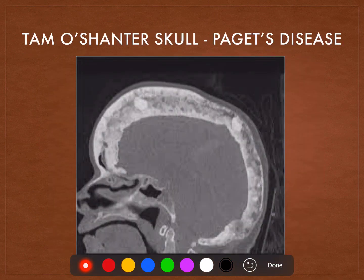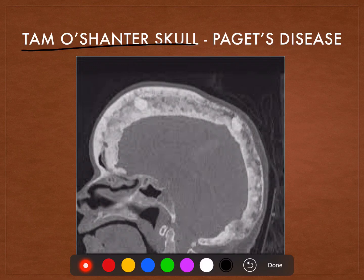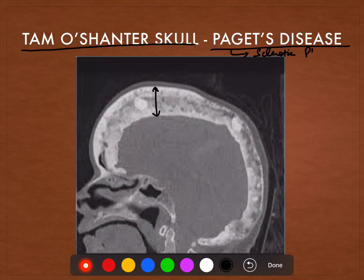The next skull is known as the tamo center skull. Tamo center means the appearance of a falling hat — the falling hat sign. This is because of the thickening of the skull due to sclerosis, and this is characteristic of the sclerotic phase of Paget's disease — the tamo center skull.